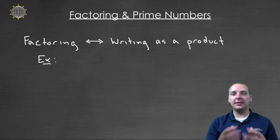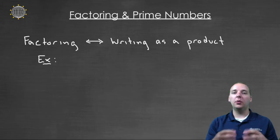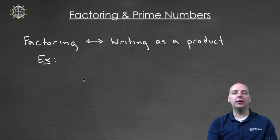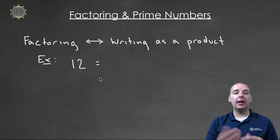When you factor a number, basically all you're doing is you're taking the number and you're breaking it apart into a product of two numbers. And so for example, if you had the number twelve and you wanted to factor the number twelve, then there's a lot of different ways you can factor twelve.